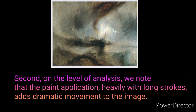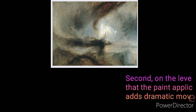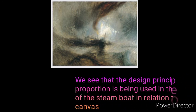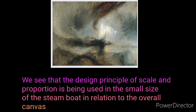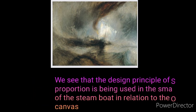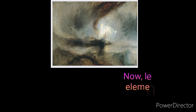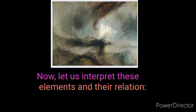Second, on the level of analysis: we note that paint applied heavily with long strokes adds dramatic movement to the image. We see that the design principle of scale and proportion is used in the small size of the steamboat in relation to the overall canvas. Now let us interpret these elements and their relation.